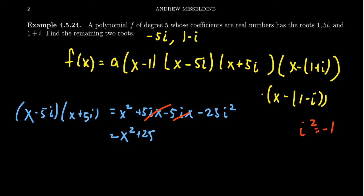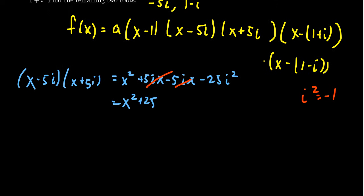You're going to get 5ix minus 5ix, they cancel each other. And remember that i squared is equal to negative 1. So this turns out to be x squared plus 25. And so that's pretty nifty right there. If you were to write f of x again, you're going to get some coefficient a, we don't know what it is yet, you're going to get x minus 1, then you're going to get x squared plus 25. Those are real coefficients.